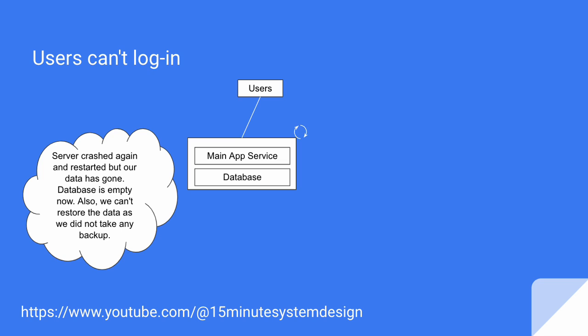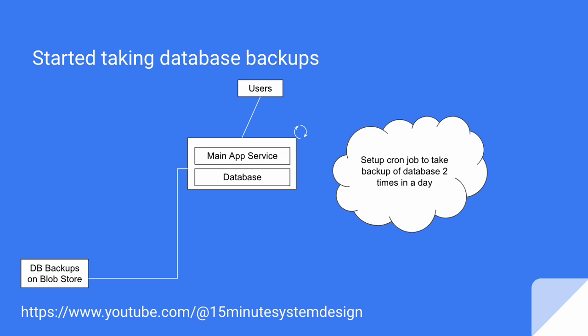We promise that from this time onwards we will take care of the data. We write a cron job which runs twice a day to take a backup of the database. We also update our auto-restart setup so that when the server restarts next time, it restores the last backup of user data. But we can't keep the backup on the same server, because if our server goes down, our backup goes with it.